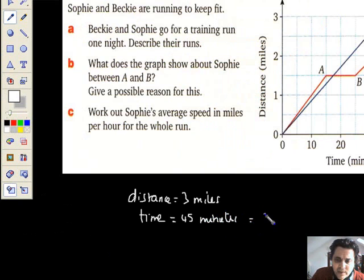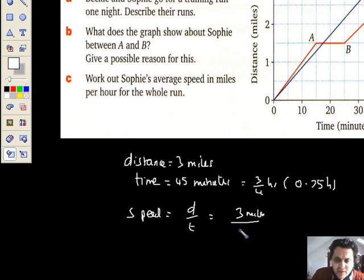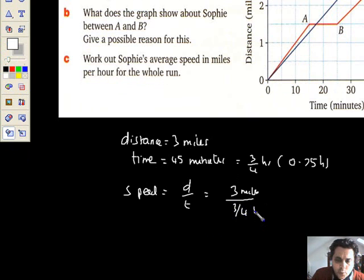Now, 45 minutes, you know, is three quarters of an hour. In other words, 0.75 hours. Now, speed, distance over time. The distance travelled is three miles. Now, look at this. Divided by three quarters of an hour. It makes the maths really, really easy. Look at this.